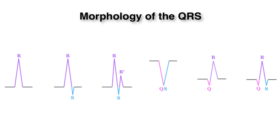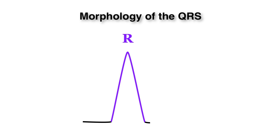Sometimes a capital letter denotes a wave of greater amplitude, whereas a minuscule letter denotes a wave of smaller amplitude.